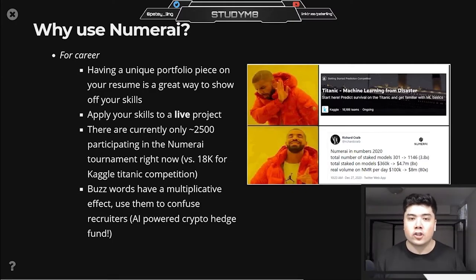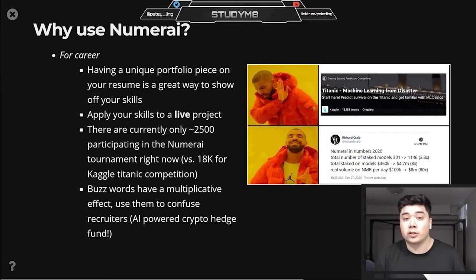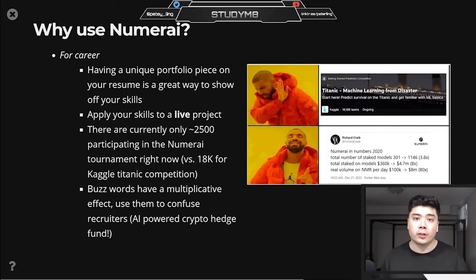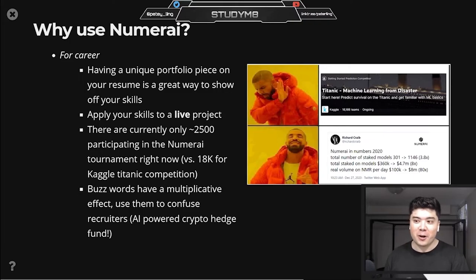The three steps left to participants — feature selection, model training, normalization, and risk mitigation — really only take coding, and for the most part open source libraries are free. In my case, that can be done with Python, Jupyter, pandas, and sklearn. From a career perspective, I think Numerai can be a really cool, unique portfolio piece. Applying your skills to a live project that's eventually applied to the stock market really stands out. With only three to four thousand active stakers versus twenty thousand on the Titanic Kaggle competition, you really stand out.